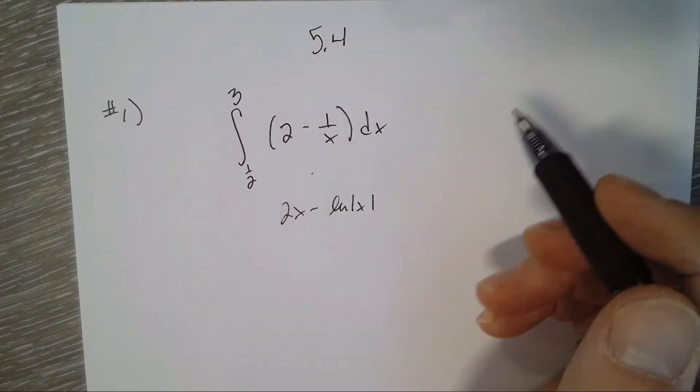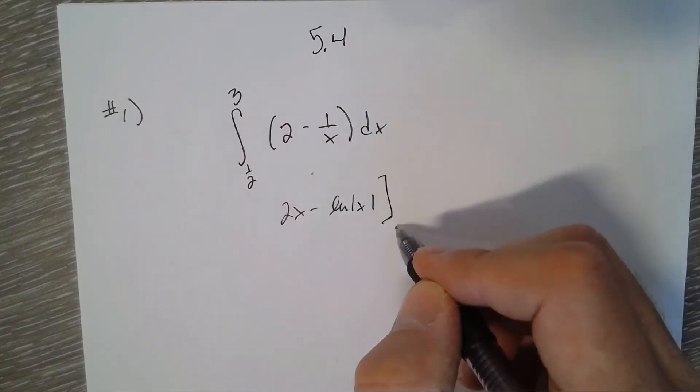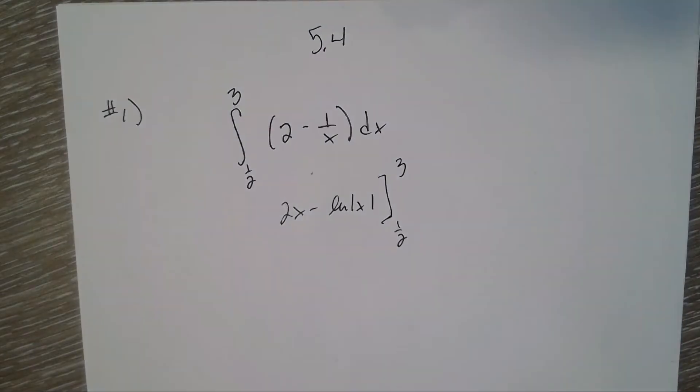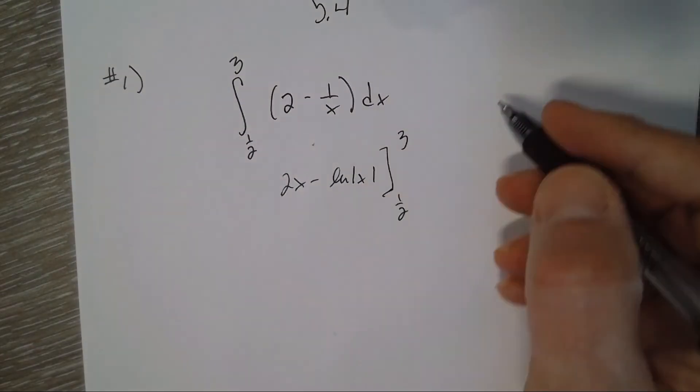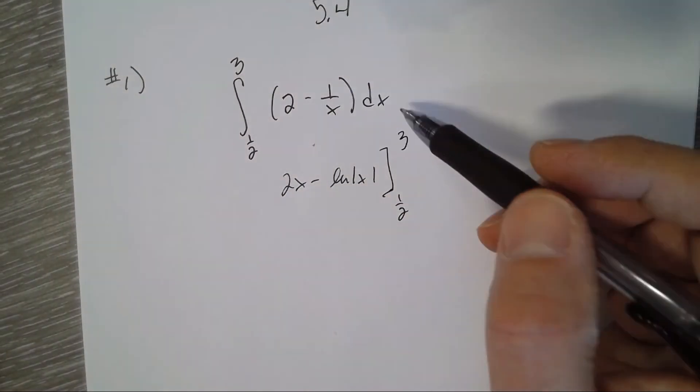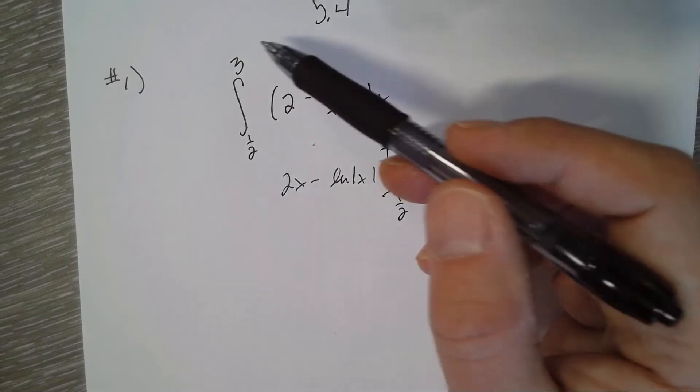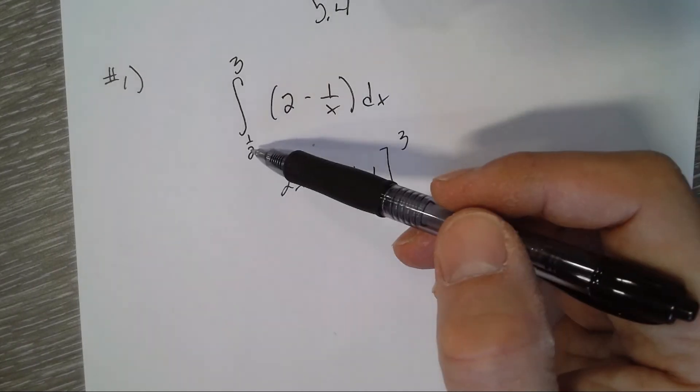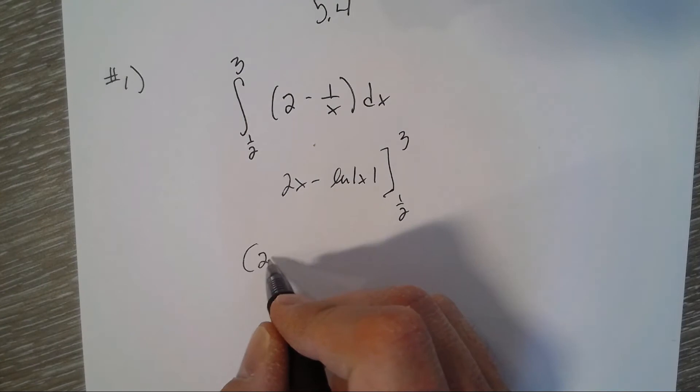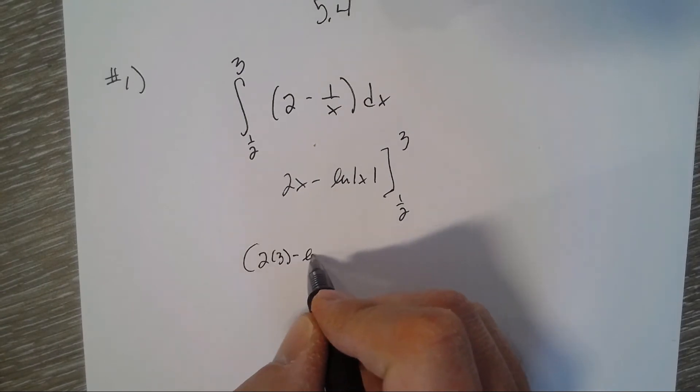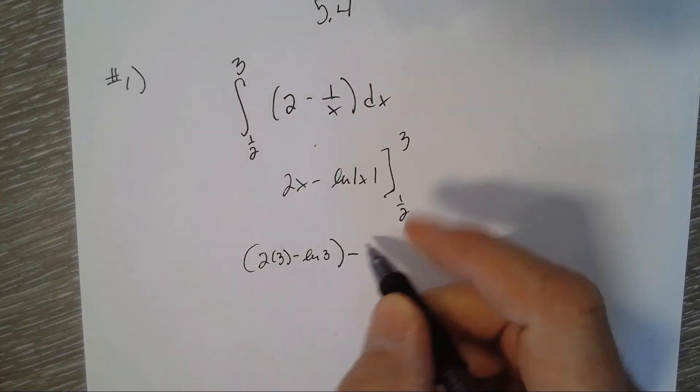We're evaluating from 1/2 to 3. Remember, it's the antiderivative evaluated at the upper bound minus the antiderivative evaluated at the lower bound. So it's 2 times 3 minus natural log of 3, minus 2 times 1/2 minus natural log of 1/2.